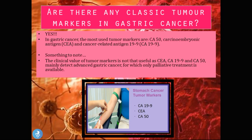In gastric cancer the most used tumor markers are CA 50, the carcinoembryonic antigen (CEA), and the cancer-related antigen CA 19.9. However, the clinical value of these markers is limited because they mainly detect advanced gastric cancer, for which only palliative treatment is available. By the time these markers are elevated enough to be detected, it usually signals very advanced disease with few treatment options.